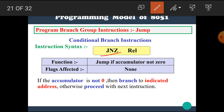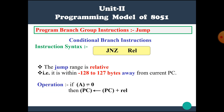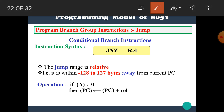The next instruction is JNZ, meaning jump if accumulator is not 0. If the accumulator is not 0, then jump to the relative address — branch to the indicated address. Otherwise, proceed with the next instruction. If the accumulator is not equal to 0, then jump to this address; if the accumulator has some value, then there is no need to go to this address.